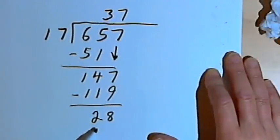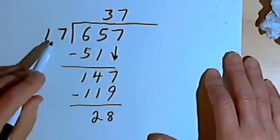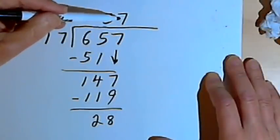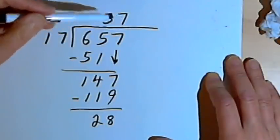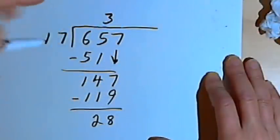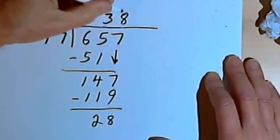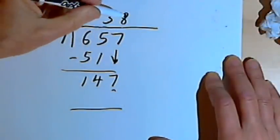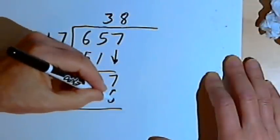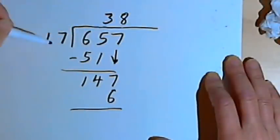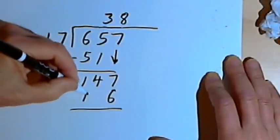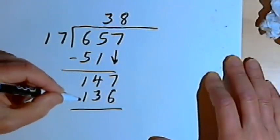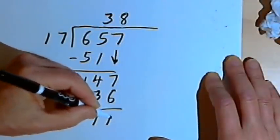So if my number here, this 28, is bigger than my divisor, that means the number I chose, 7, I thought it would go in 7 times, was too small. So once again, I've got to do some erasing. Let's change that 7 to an 8 and assume it goes in 8 times and see what happens. So 8 times 7 is 56. I'll write the 6 and carry a 5. 8 times 1 is 8, plus 5 is 13.